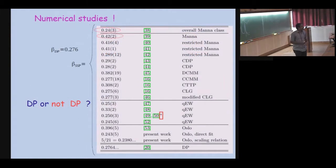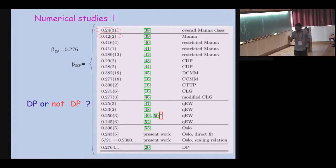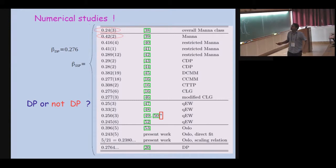The reason for the confusion is that numerics gives the same exponents for different models. So the question is: DP or not DP?